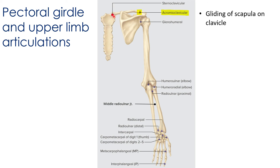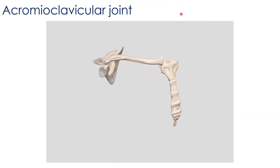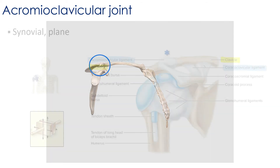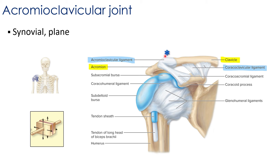The acromioclavicular joint is the articulation between the acromion of the scapula and the clavicle, where we see gliding motion of the scapula on the clavicle. It is supported by the acromioclavicular ligament, which connects the acromion to the clavicle, and the coracoclavicular ligament, which connects the coracoid process of the scapula to the clavicle to help stabilize the joint. The acromioclavicular joint is classified as a synovial plane.